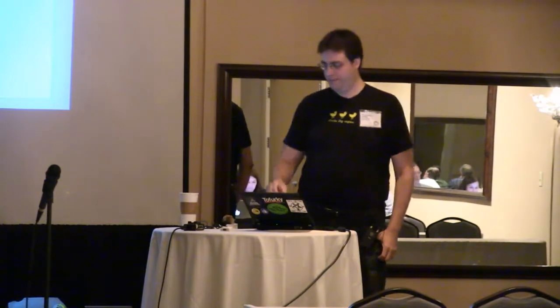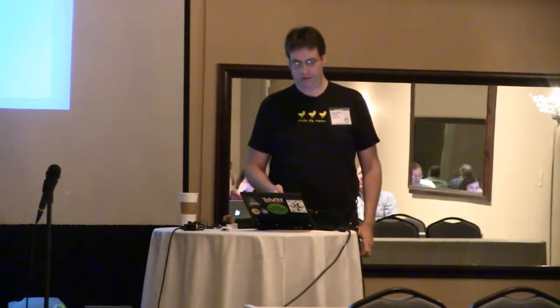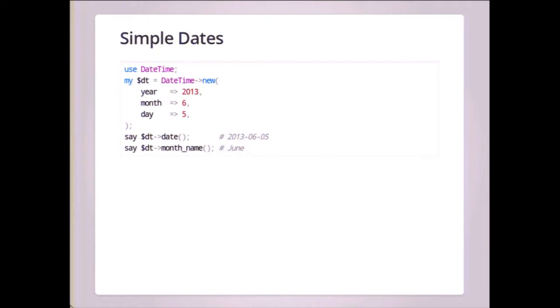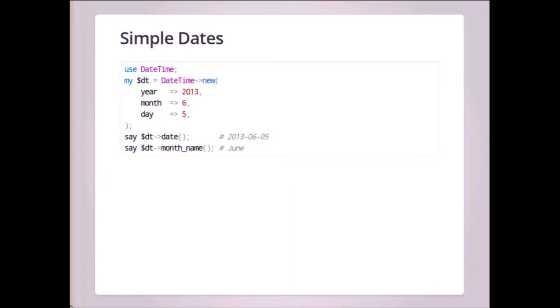Here's a really simple example of how you can use the DateTime module for simple dates. You make a new DateTime, give it a year, month, day, and you can ask for information from that object. We can ask for the date and it prints it in year-month-day format. We can ask for the month name and it tells you it's June. There are many other things you can ask, like the name of the day, what quarter you're in, or what week of the year.